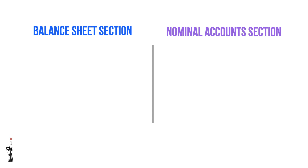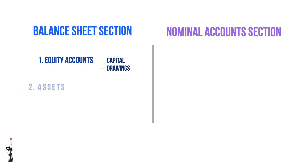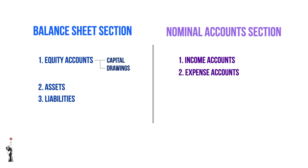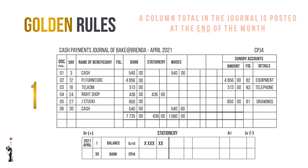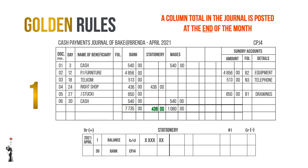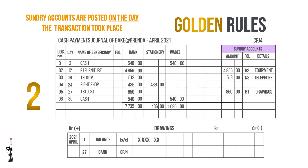In the balance sheet account section, the following accounts will be recorded: firstly the equity accounts, which are capital and drawings; secondly all the assets; and lastly all the liabilities. In the nominal account section, income accounts are recorded first, then expense accounts. Also remember the two golden rules: if it is a column total in the journal, you post the total at the end of the month. If it is a sundry account, you post the amount on the day the transaction took place.